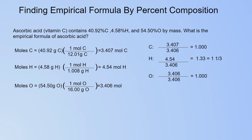Now you're not there yet. This is the ratio between the moles of carbon, hydrogen, and oxygen. But an empirical formula has to have a whole number ratio. To make this whole number, you multiply by 3 — the lowest whole number that makes all values whole numbers. Taking 1 to 1⅓ to 1 and multiplying by 3 gives a 3 to 4 to 3 ratio. So the empirical formula is C3H4O3.